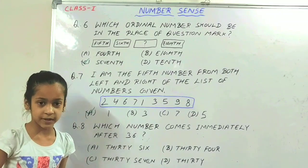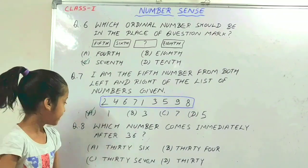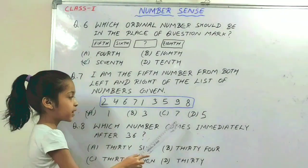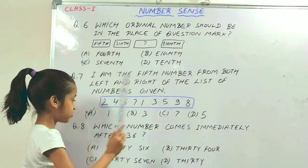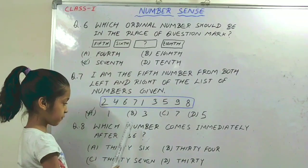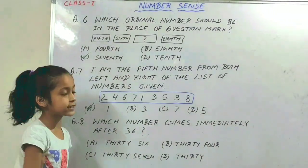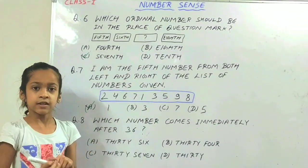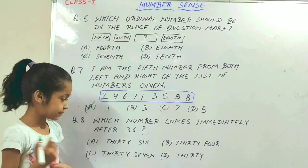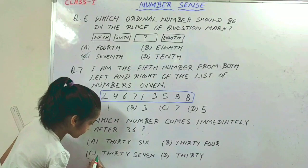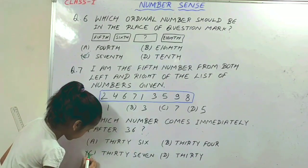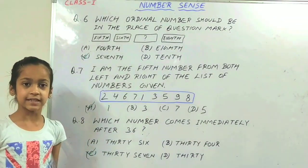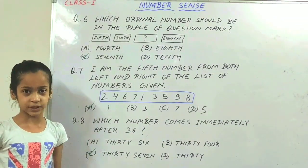The next question is: which number comes immediately after 36th? After 36th, 37th comes. So the answer is 37th. Option C is the correct option.